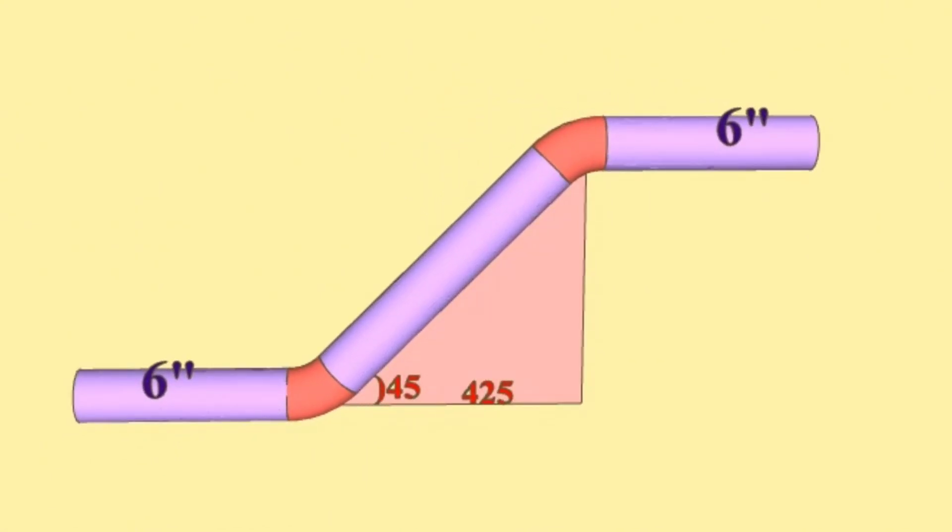To find the length of the pipe piece between these two elbows, first we must calculate the distance between the centers of the elbows. Next, we need to find the lengths of the 6 inch 45 degree elbows, and finally, from the total length between the centers of the elbows, we will subtract the lengths of the elbows and the gaps for welding. Let's go step by step.